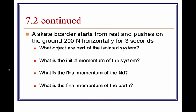Here's a sample problem for tonight's video. A skateboarder starts from rest and pushes on the ground with 200 newtons horizontally for three seconds. What objects are part of the isolated system? What is the initial momentum of the system? What is the final momentum of the kid? And what is the final momentum of the earth? Make sure to fill in these answers online from my website and to read through the section in your textbook.